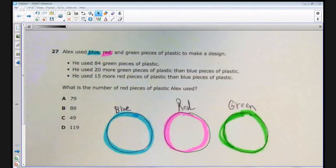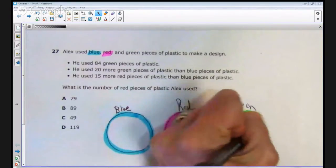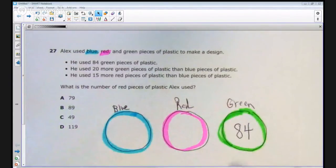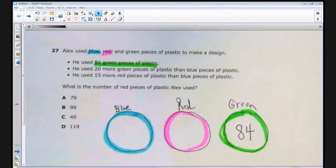Now, in the first statement, the first bulleted statement, I am told that he used 84 green pieces of plastic. So, since I know the number of pieces of green that are being used, I went ahead and placed that number in the last circle.